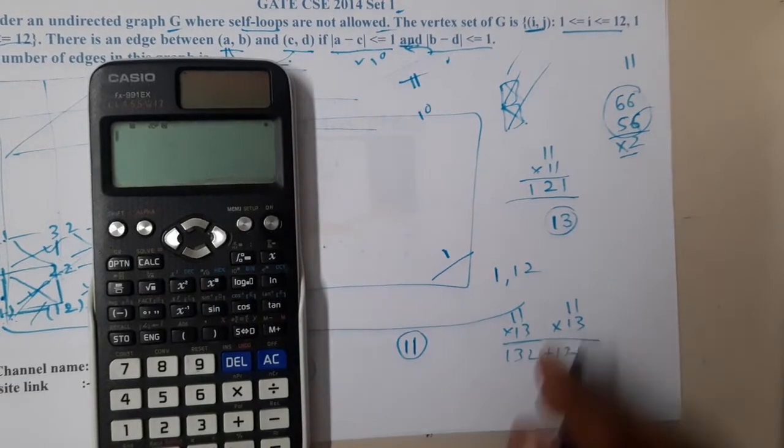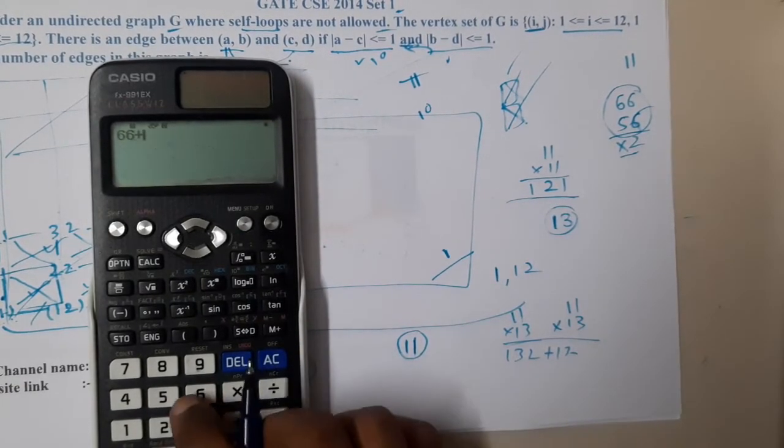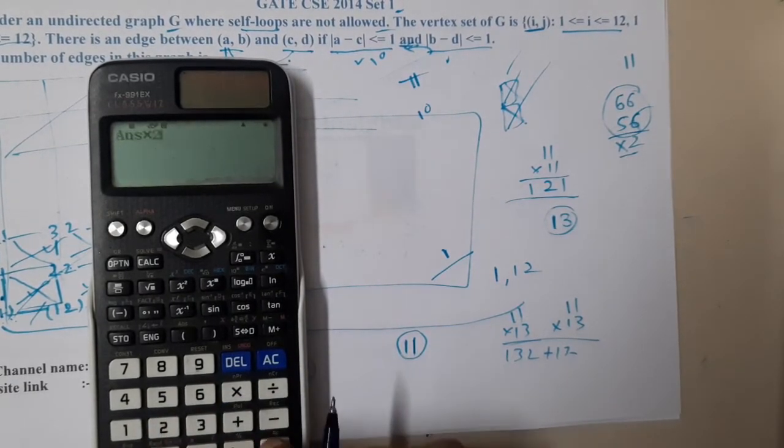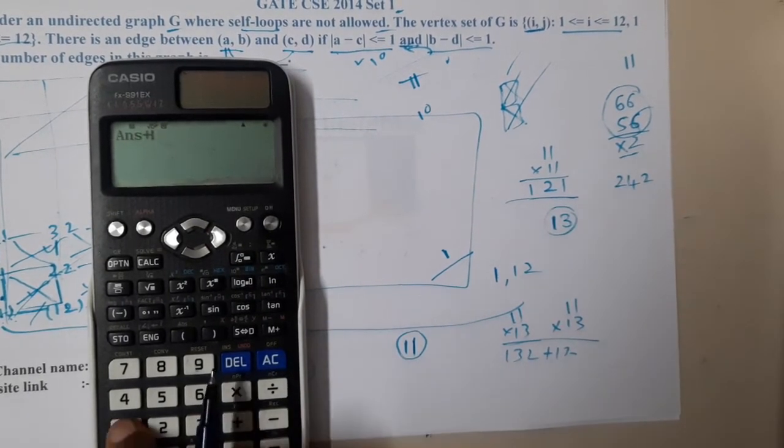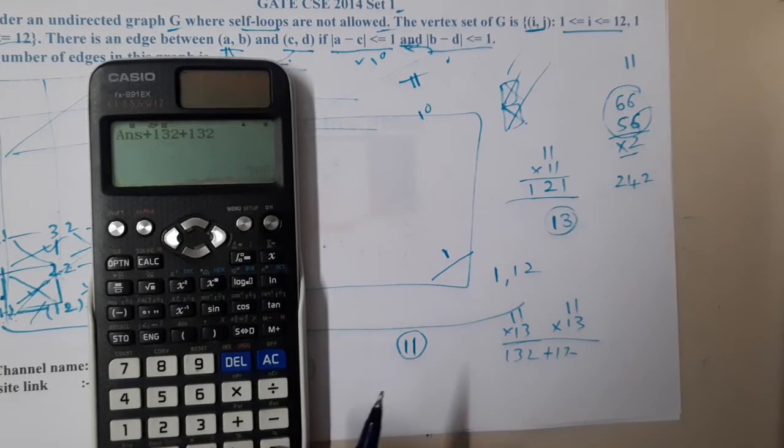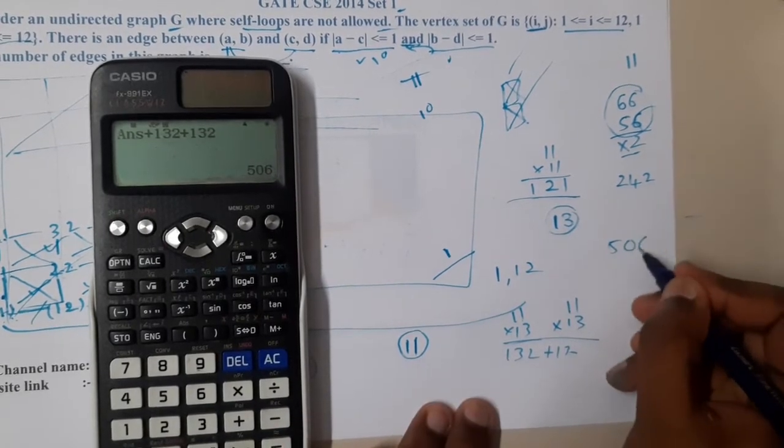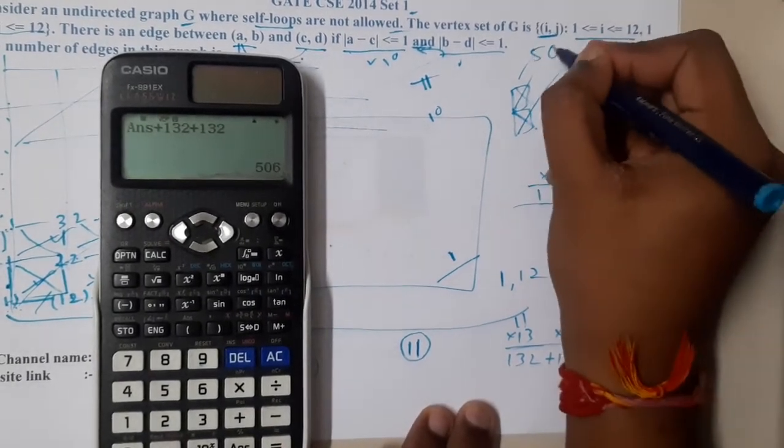Let's continue. It's (66 + 55) × 2, which is 242. So 242 + 132 + 132. The final result is 506. The answer is 506. Yes, it's correct.